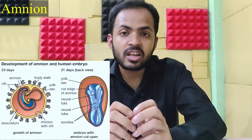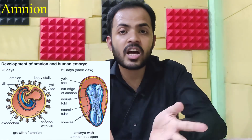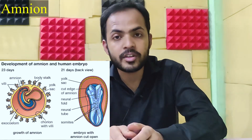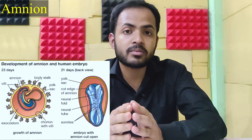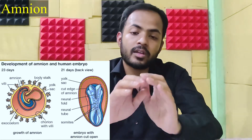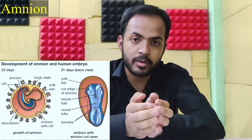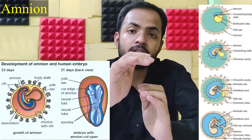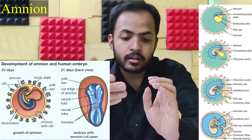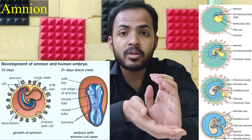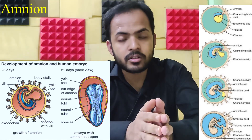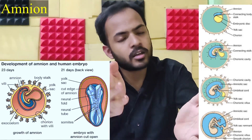Our second topic is Amnion. What is Amnion? It's a thin membrane that covers the amniotic cavity. This amniotic cavity ultimately develops in the embryoblast. The roof of the cavity is formed by the Amnion, and the floor of the cavity is formed by the Bilaminar Germ Disc.